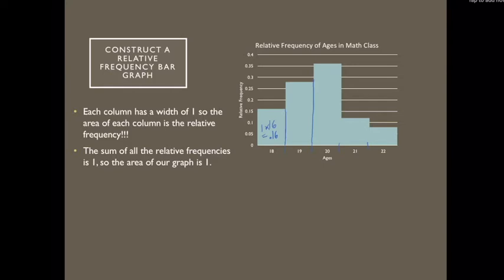This column here has an area of 0.28, 0.36, 0.12, and 0.08. That's going to be the case. So the sum of all the relative frequencies in our graph is 1. So the area of our graph equals 1.